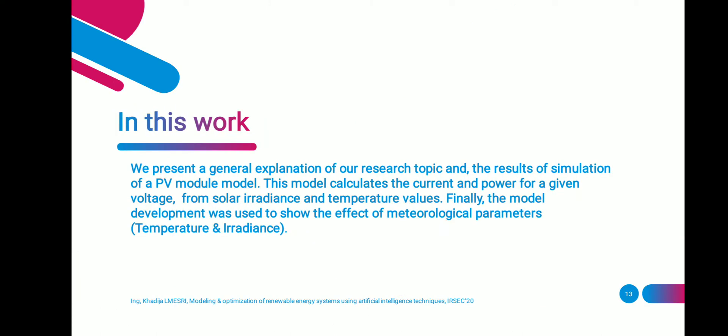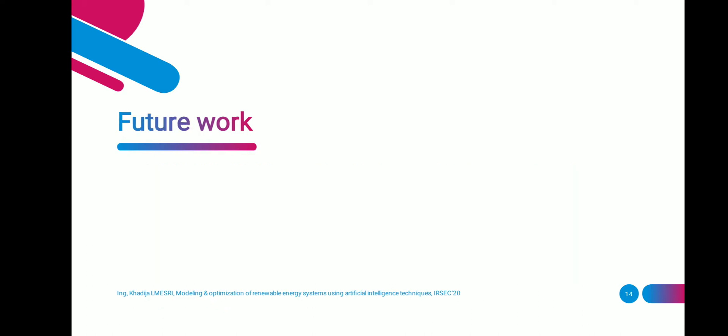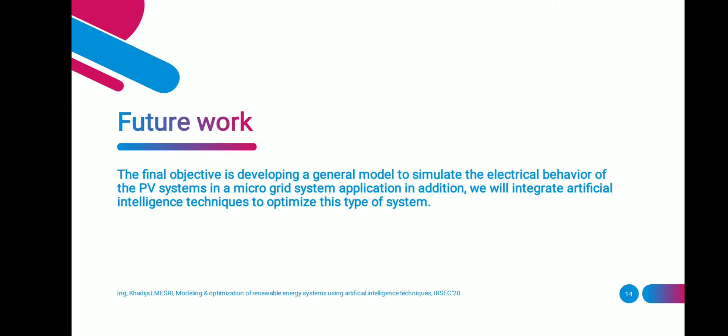In this work, we present a general explanation of our research topic and the results of simulation of a PV model. This model calculates the current and power for a given voltage from solar irradiance and temperature values. The model development was used to show the effect of meteorological parameters, especially temperature and irradiance. The final objective is developing a general model to simulate the electrical behavior of the PV systems in a microgrid system application.